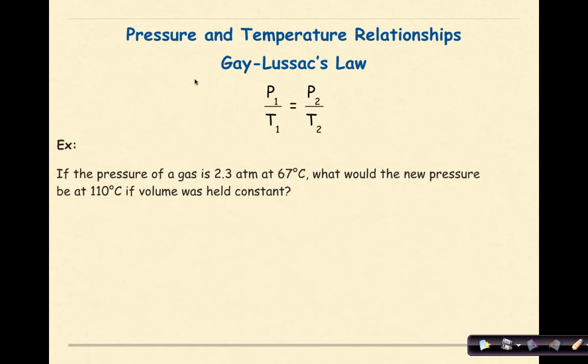Let's look at an example of the relationship between pressure and temperature. If the pressure of a gas is 2.3 atmospheres at 67 degrees Celsius, what would the new pressure be at 110 degrees Celsius if volume was held constant?